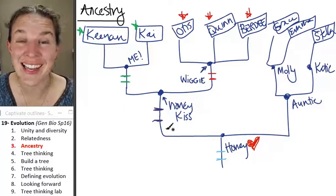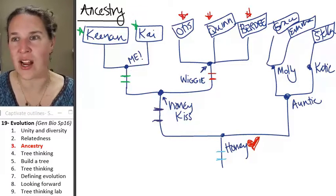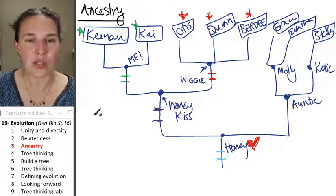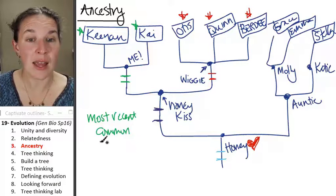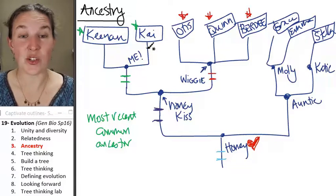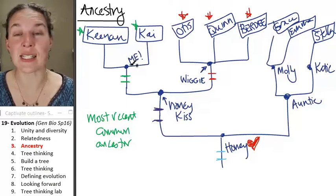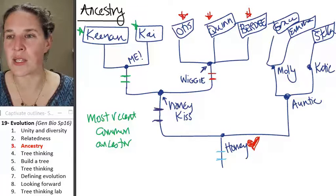So you can look at your most recent common ancestor. You can look for a most recent common ancestor to determine relatedness. And do you agree that Kenan and Kai, their most recent common ancestor is me? But what if we were to say, we're going to go, we're not messing around with Kenan and Kai.